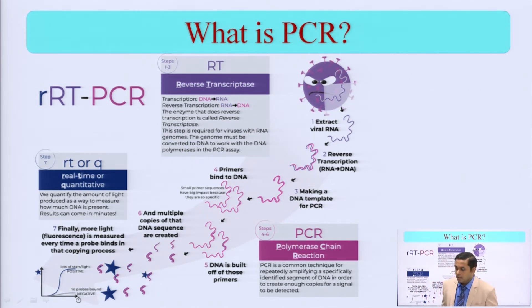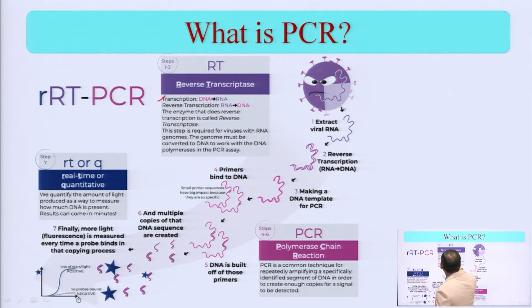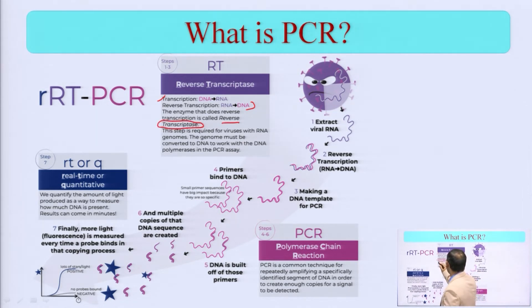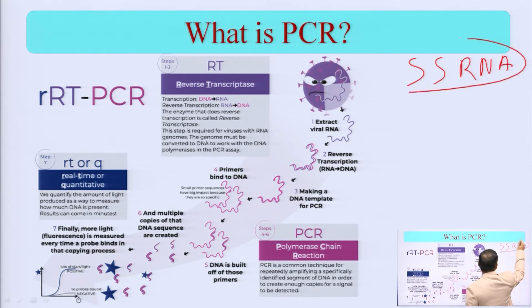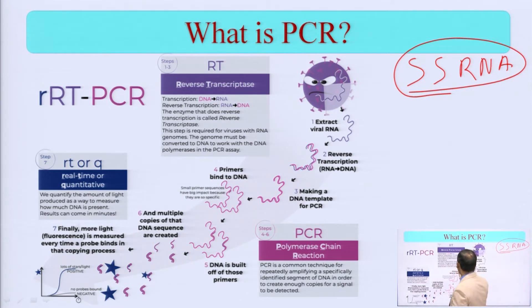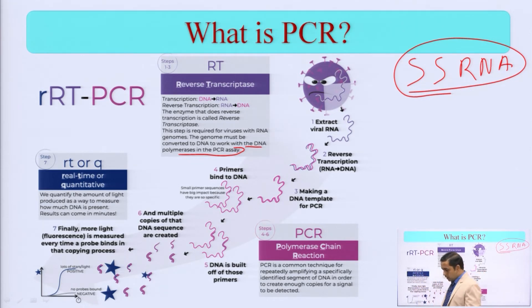What are the steps of RT-PCR, and how does it give accurate results to detect the COVID-19 virus SARS-CoV-2? In normal transcription, DNA goes to RNA. In reverse transcription, RNA is converted to DNA using the enzyme reverse transcriptase. This step is required for viruses with an RNA genome, because SARS-CoV-2 is a single-strand RNA genome. The genome must be converted to DNA to work with DNA polymerase in the PCR assay.